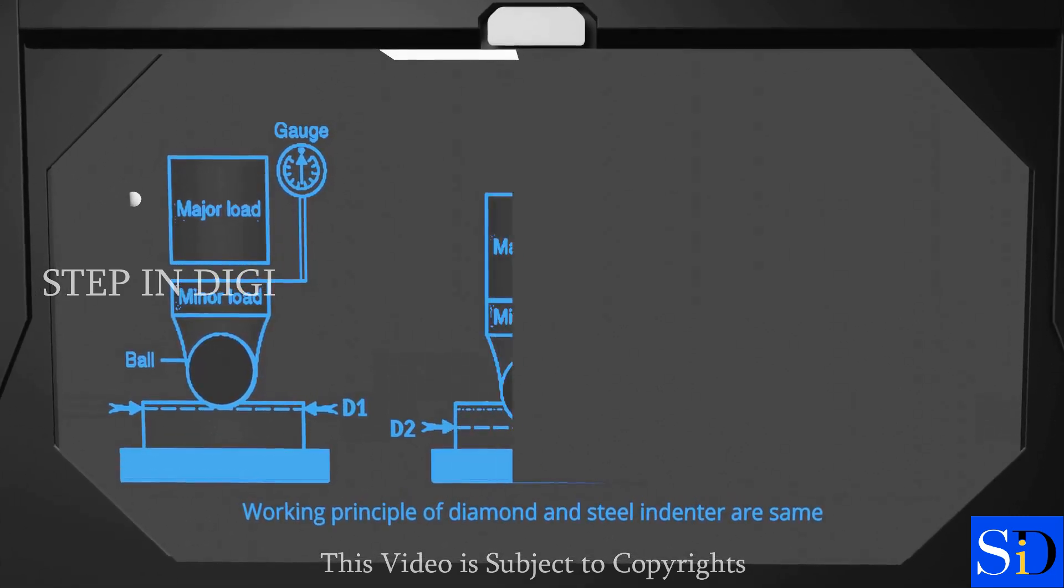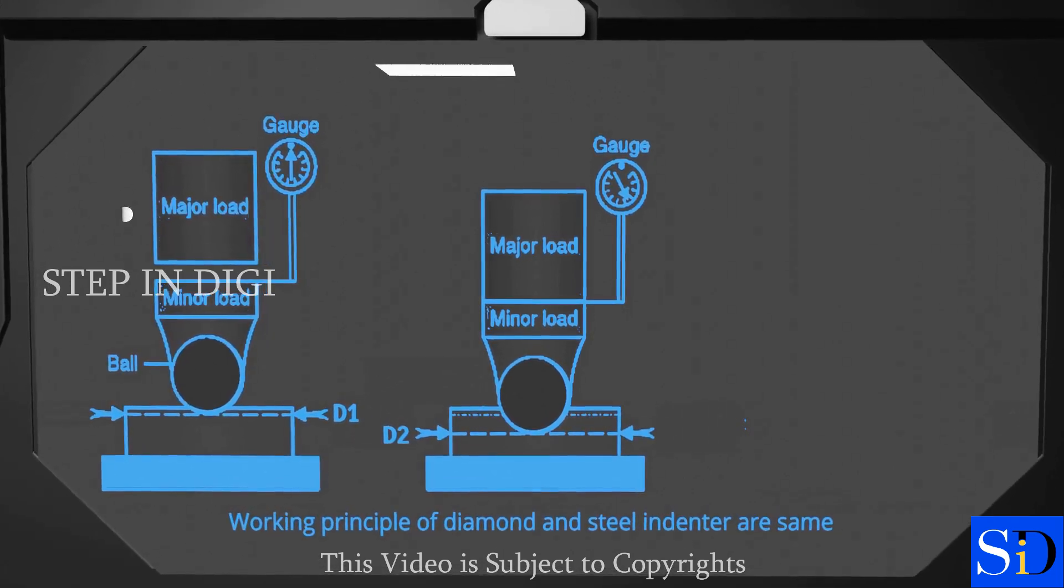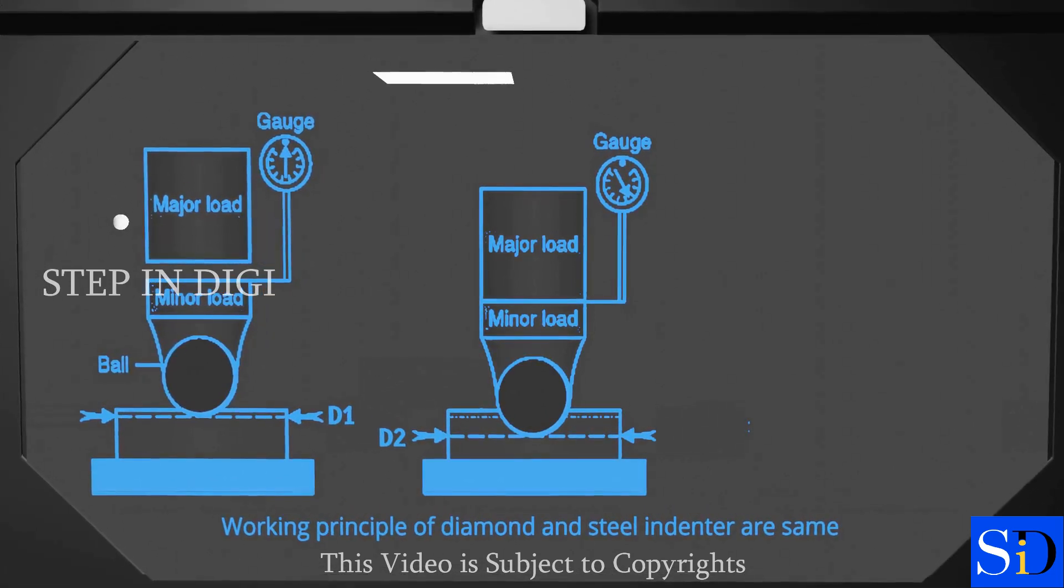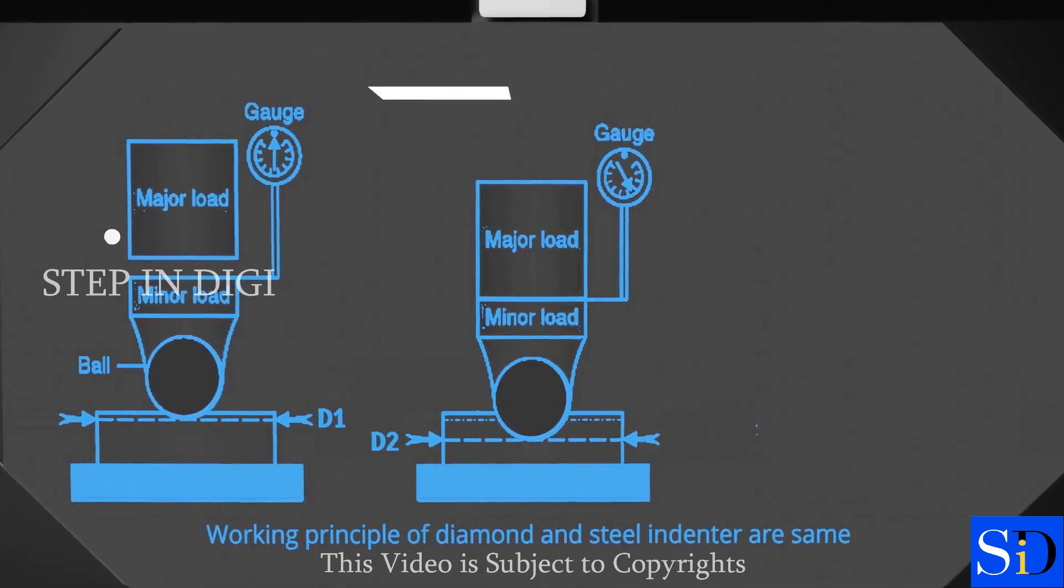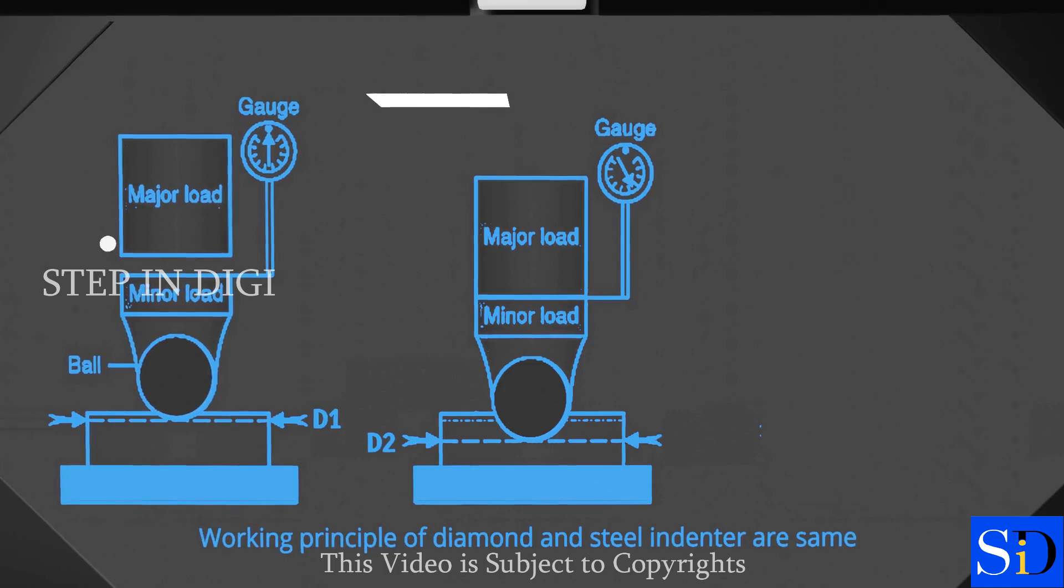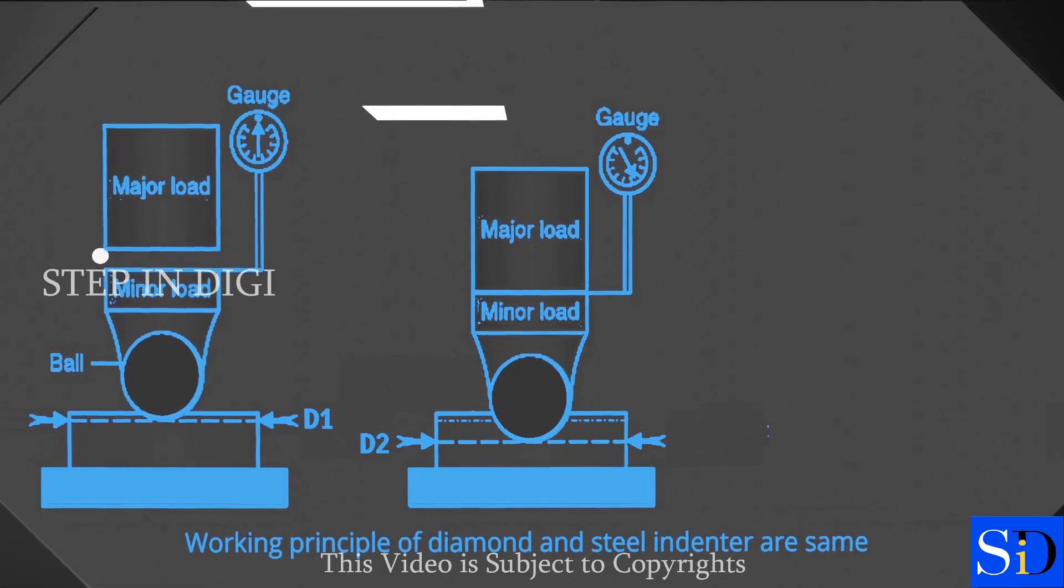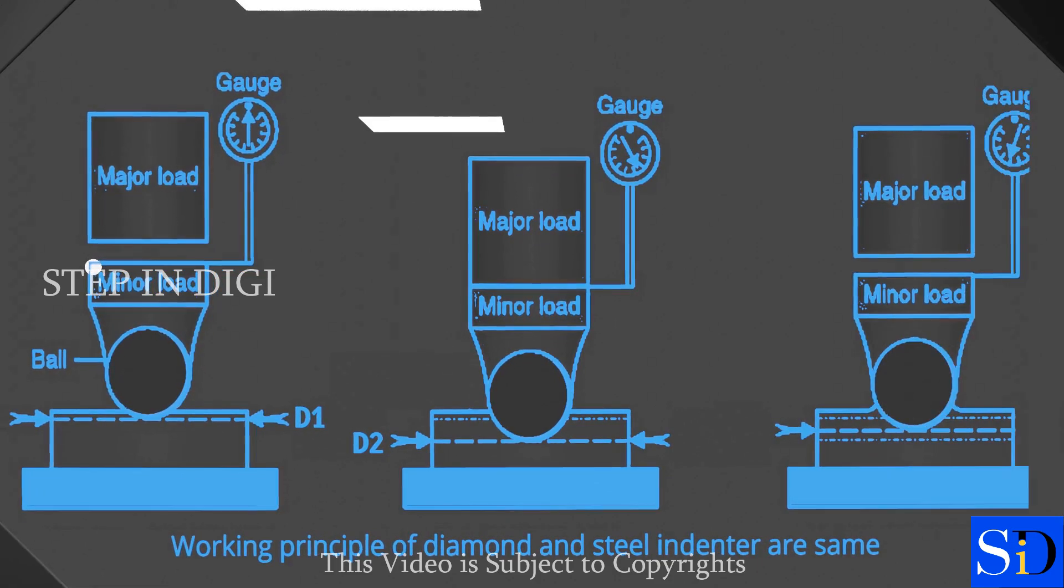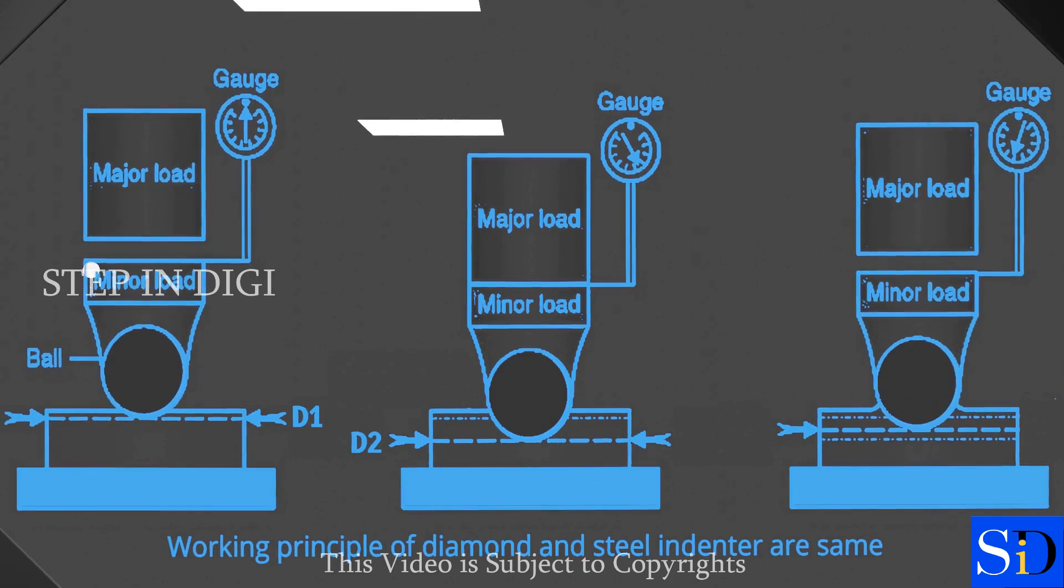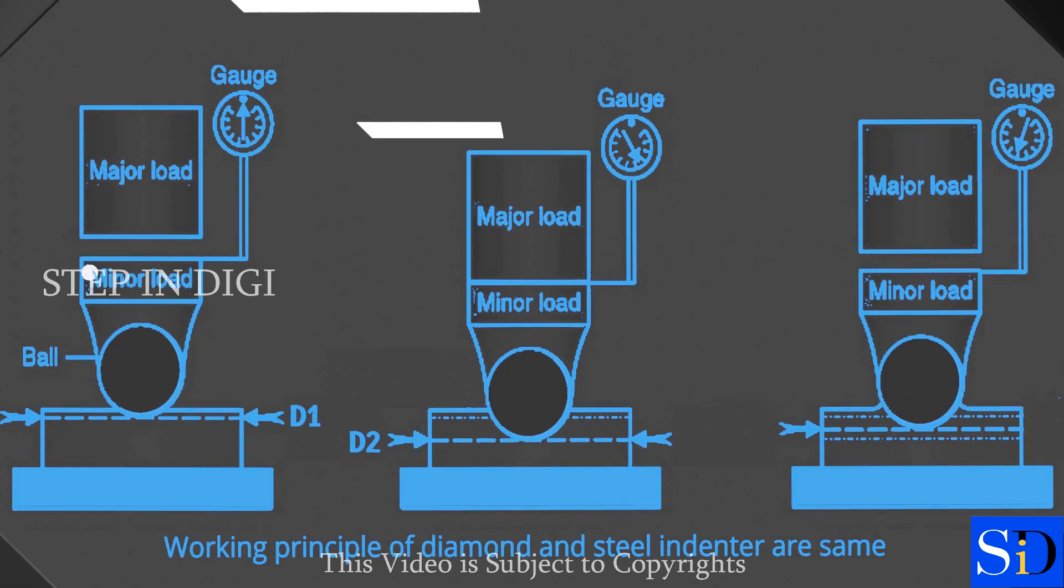With minor load still operating, major load is added according to the scale mentioned in the machine. The application of major load increases the depth of penetration. Some materials show considerable time-dependent plasticity. The duration of application of major load shall be neither less than 10 seconds nor greater than 15 seconds. Then the major load is removed with the minor load still acting. This operation results in the partial recovery in the depth of indentation.